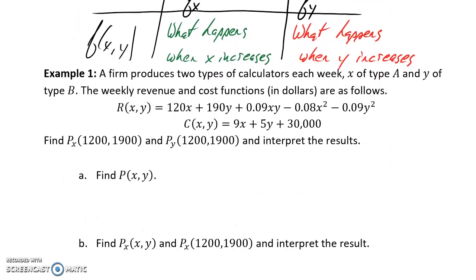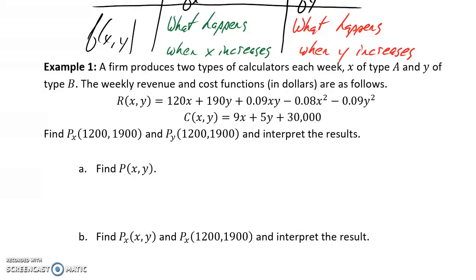We can look at applying this in our first example, where we have a firm that produces two different types of calculators. We're given a revenue and a cost function, and we're going to be asked to evaluate the marginal profit function with respect to x and with respect to y, then evaluate that at a specific output level. We'll interpret p sub x as what happens to profit as production of type A calculators increases, and p sub y as what happens when production of type B calculators increases.